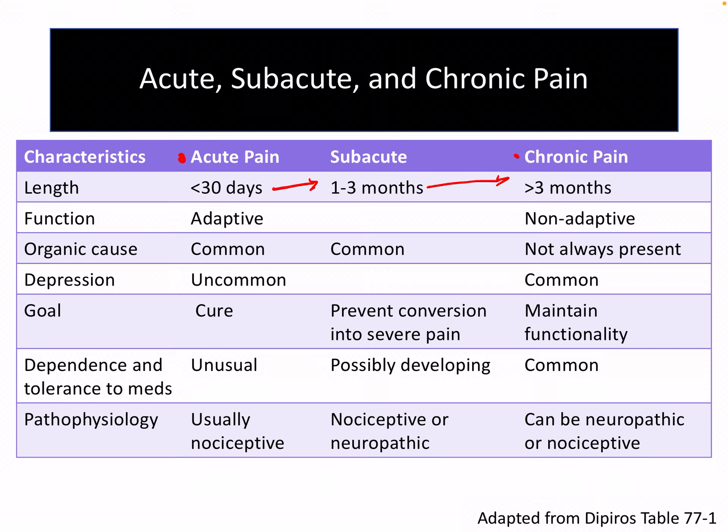Dependence and tolerance to medications is much more unusual for acute pain, especially because we're supposed to treat it between three to five days, versus in chronic pain it's much more common, especially in patients taking opioids. When we talk about pathophysiological characteristics, chronic pain is more likely to be neuropathic or nociceptive, whereas acute pain is usually just nociceptive.